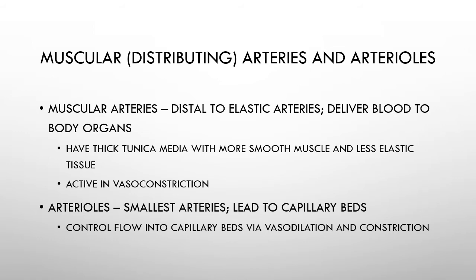From elastic arteries we move into muscular arteries, which begin as we get into smaller blood vessels. As their name tells us, they have a larger amount of smooth muscle inside the tunica media and are less elastic. They allow for active vasoconstriction - when needed we can make the blood vessel even smaller, or relax it to make it larger, actively changing vessel size as needed.